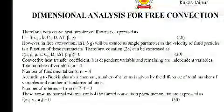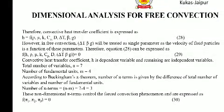Therefore, the convective heat transfer coefficient is expressed as h = f(rho, mu, k, Cp, D, delta T, beta, g). However, in free convection, delta T, beta, and g will be treated as a single parameter since the velocity of fluid particles is a function of these parameters. The equation can be expressed as f(h, rho, mu, k, Cp, D, delta T·beta·g) = 0. Here h is the dependent variable and the remaining are independent variables. Total number of variables n = 7 and m = 4, so number of pi terms = 7 − 4 = 3. We will calculate pi 1, pi 2, and pi 3.